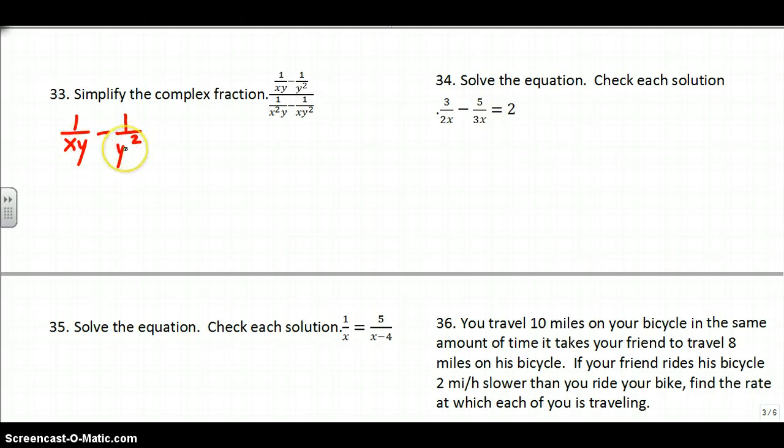You need common denominators in order to subtract them. I notice this has an x, but this one does not. So I need to multiply by x over x. I'm basically multiplying by 1 in the form of x over x. This denominator would now be xy squared. This one's just xy, so I need another y over here.